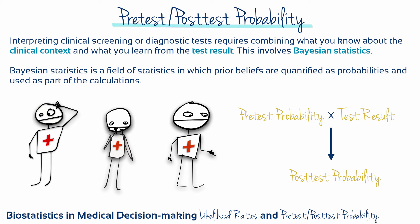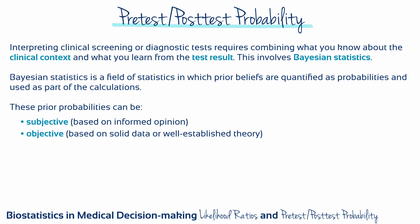Interpreting clinical screening or diagnostic tests requires combining what you know about the clinical context and what you learn from the test result. This involves Bayesian statistics — a field of statistics in which prior beliefs are quantified as probabilities and used as part of the calculations. These prior probabilities can be subjective or objective, based on informed opinion or based on solid data or well-established theory.